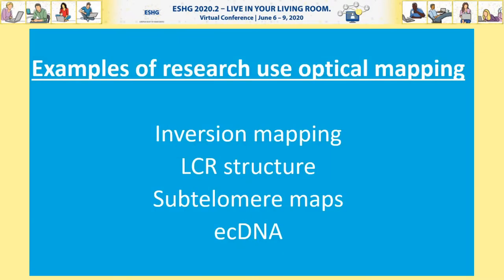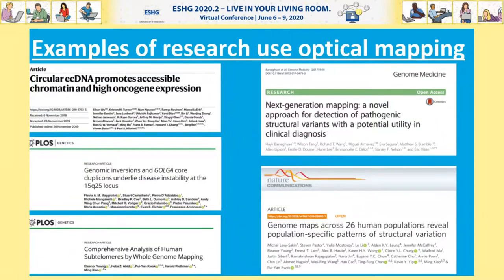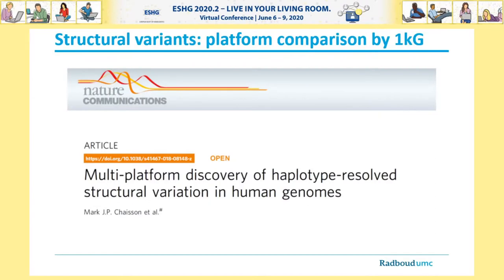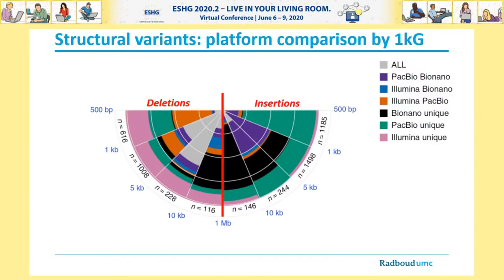After introducing the technical basis of optical mapping, I'd like to highlight a few recent research studies — including characterizing extra-chromosomal DNA, understanding low-copy repeats and human subtelomeres, clinical case reports, and SVs across entire populations. The most comprehensive comparison of SV calling technologies comes from the Structural Variant Group of the 1000 Genomes Consortium. Mark Jason and colleagues recently demonstrated that certain structural variants — particularly those larger than 1 kilobase — are only picked up by optical mapping and not by sequencing approaches, demonstrated by all the black-colored insertions and deletions in their diagram.